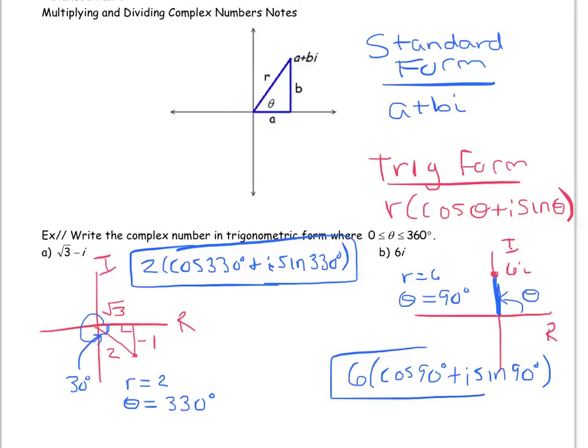If you don't believe this is 6i, go ahead and evaluate cosine of 90 degrees. We know it's 0. And sine of 90 degrees, we know that's 1. And then distribute the 6 and you'll get back to 6i.